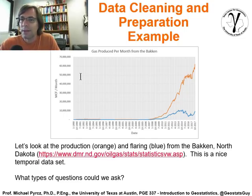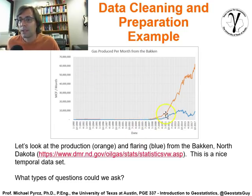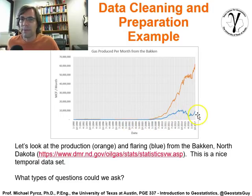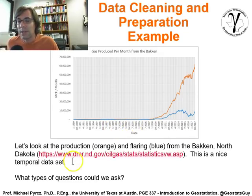Let's make some comments about data cleaning and show an illustrative example. I went online and downloaded the historical datasets for gas produced per month from the Bakken in North Dakota and the amount of gas that's flared. Orange is the gas that's produced, blue is the amount that is flared — on the basis of roughly every four to six months or so. We have a nice temporal dataset of what's going on over the entire Bakken.